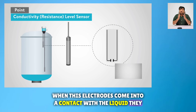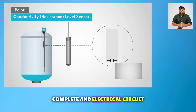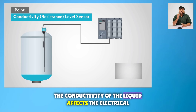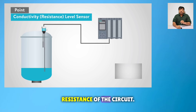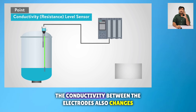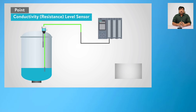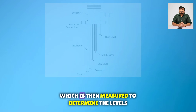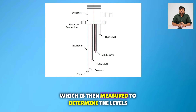The conductivity of the liquid affects the electrical resistance of the circuit. As the liquid level changes, the conductivity between the electrodes also changes, leading to a variation in resistance, which is then measured to determine the liquid level.